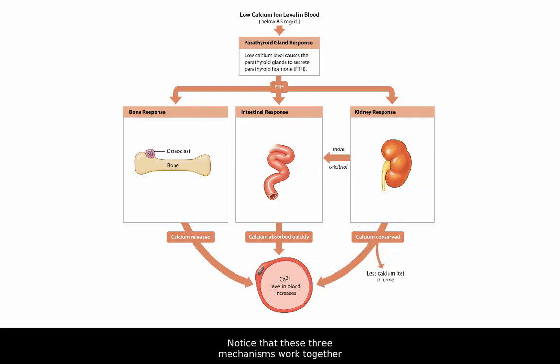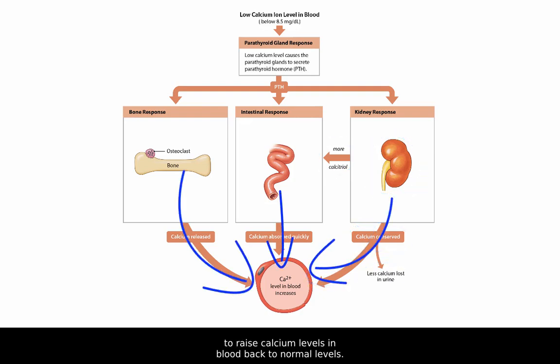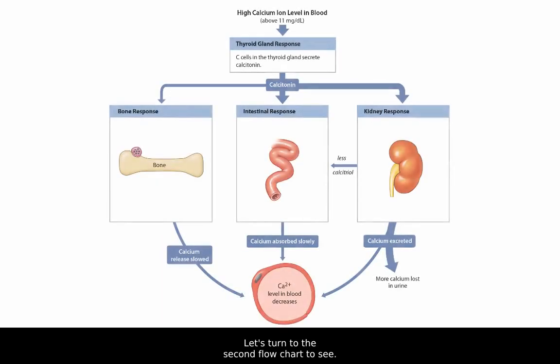Notice that these three mechanisms work together to raise calcium levels in blood back to normal levels. What happens if blood calcium levels rise above normal? Let's turn to the second flowchart to see.